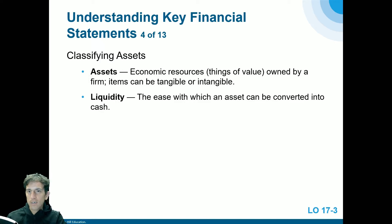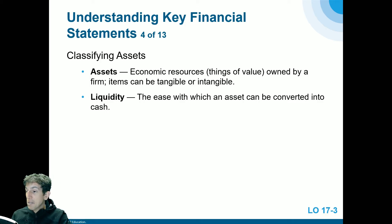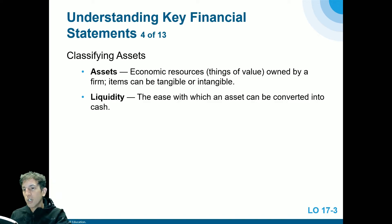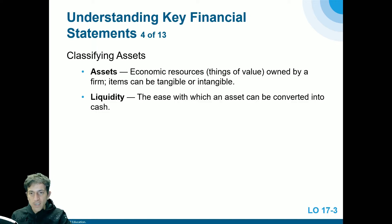Assets are economic resources — things of value owned by a firm. Items can be tangible or intangible. Tangible assets include buildings, leashes, cash registers, desks, and chairs. Intangible assets are things you can't necessarily touch but are worth value, such as a logo or intellectual property.